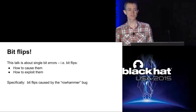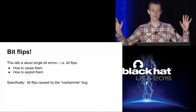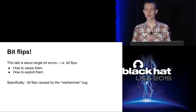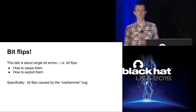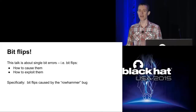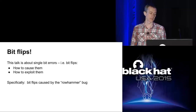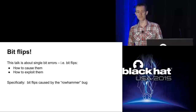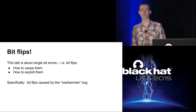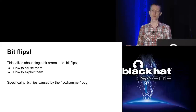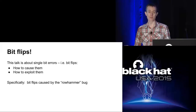Hi everyone. This is a talk about bit flips - single-bit errors in memory - how to cause them and how to exploit them. Specifically, it's about exploiting bit flips caused by a particular hardware bug known as the row hammer bug.